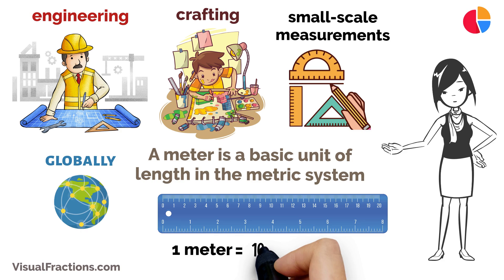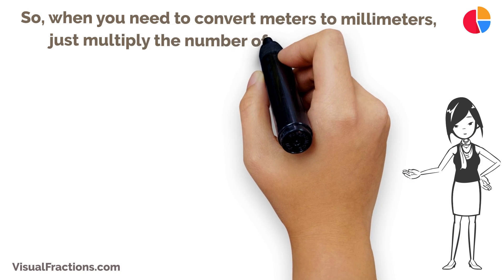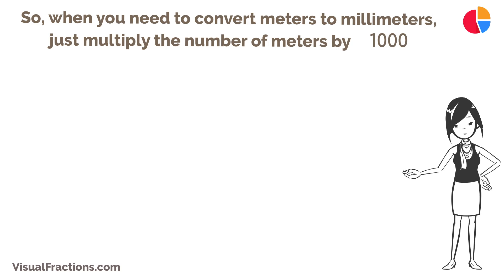Here's the easy part. One meter equals 1,000 millimeters. So, when you need to convert meters to millimeters, just multiply the number of meters by 1,000.